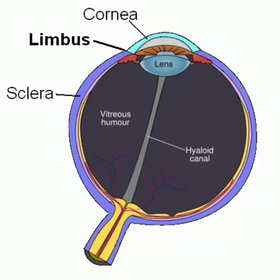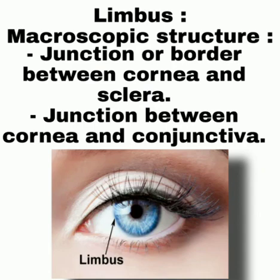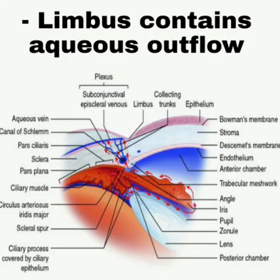Hi friends, this is Udaybhanu, hope you are doing well. Today I am going to discuss about the limbus. As we all know, limbus is a junction or a border between cornea and sclera, and also between cornea and conjunctiva.